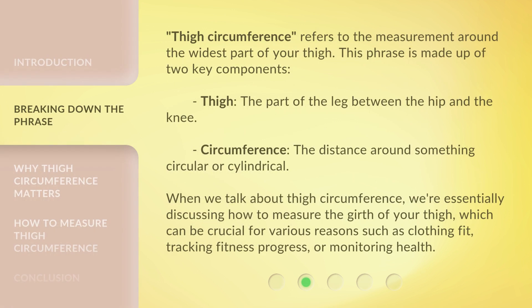Thigh circumference refers to the measurement around the widest part of your thigh. This phrase is made up of two key components: 'thigh' — the part of the leg between the hip and the knee — and 'circumference' — the distance around something circular or cylindrical. When we talk about thigh circumference, we're essentially discussing how to measure the girth of your thigh, which can be crucial for clothing fit, tracking fitness progress, or monitoring health.